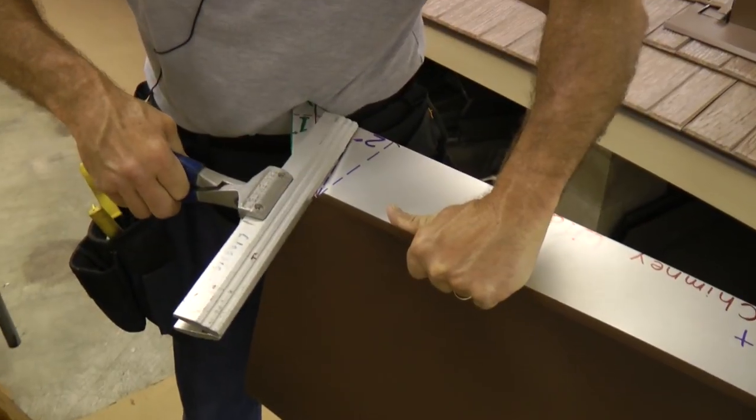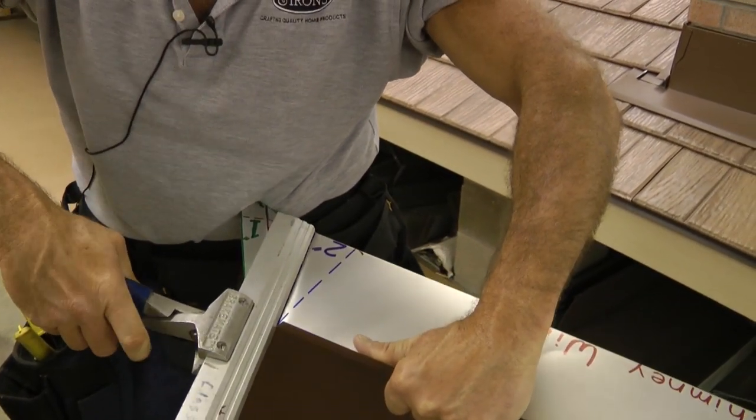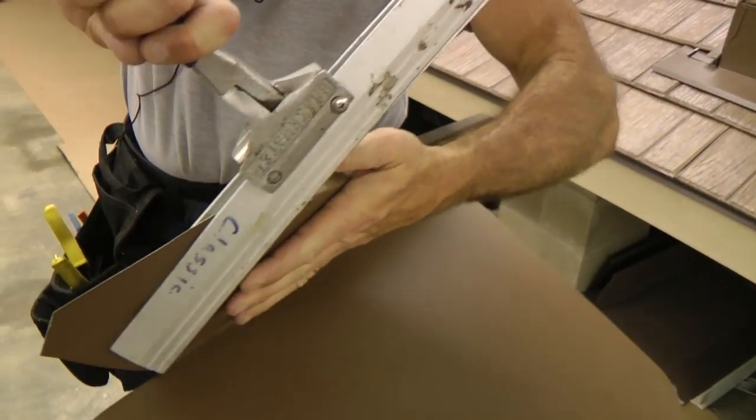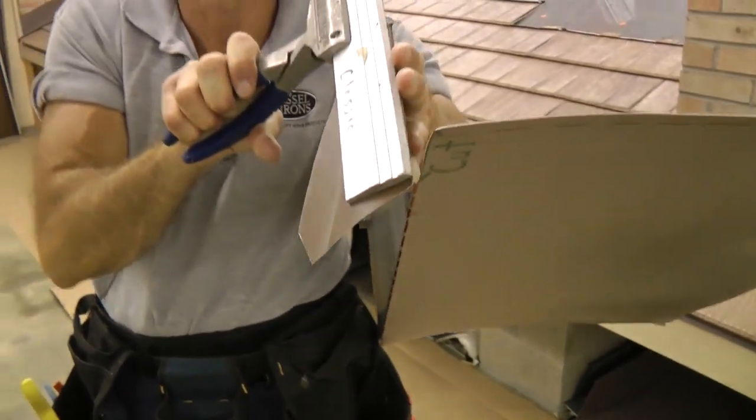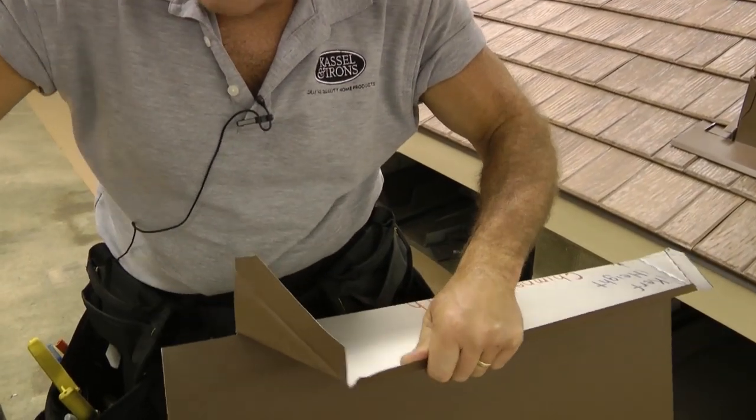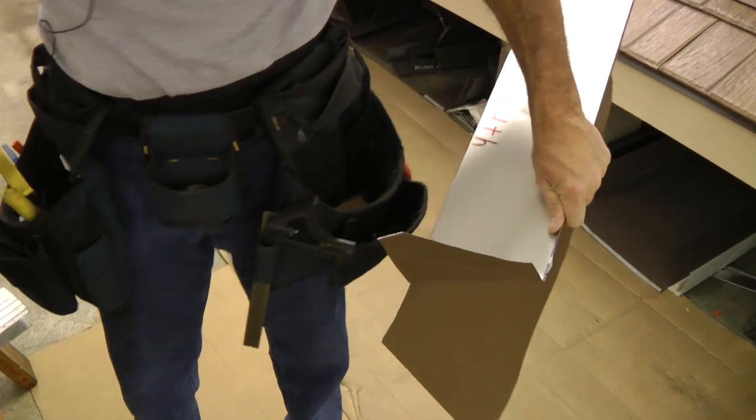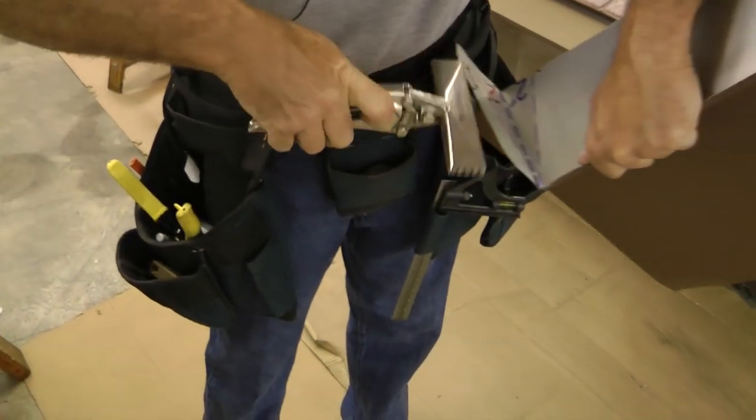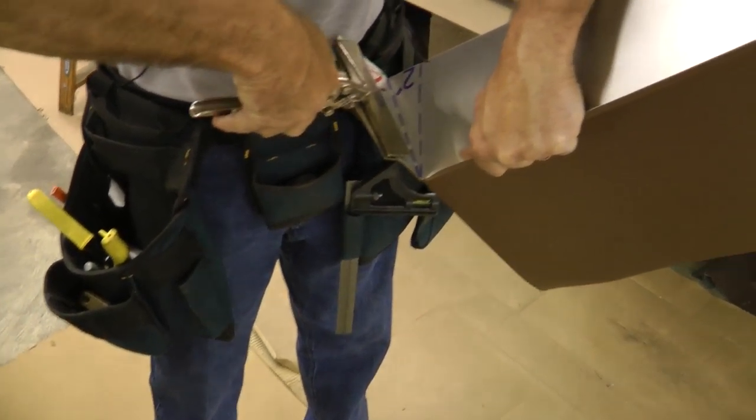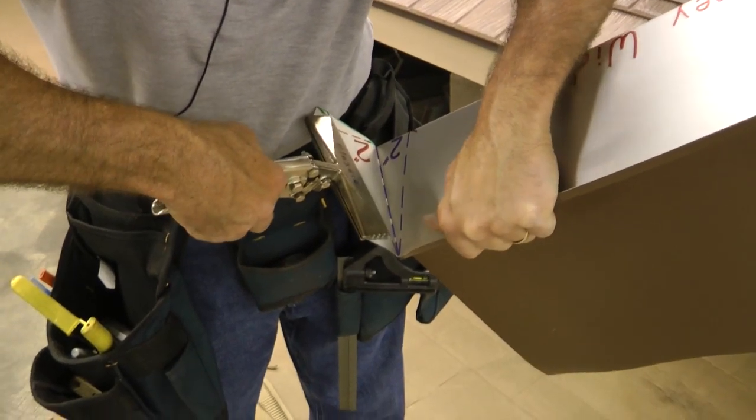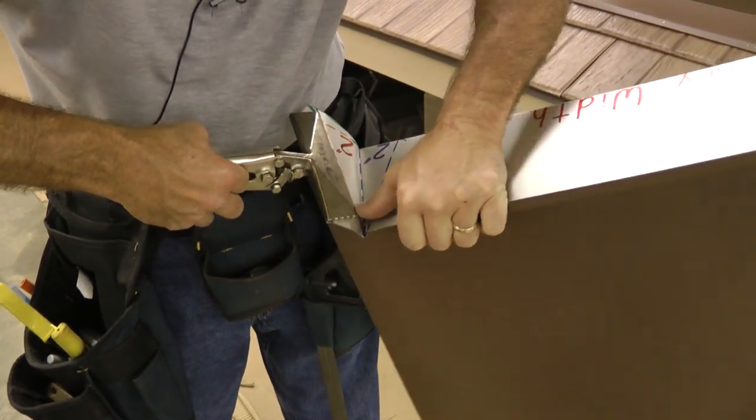The blue line here represents the outside of the dog ear. And before I bend that all the way down, I'm going to come back and bend here on the red line.